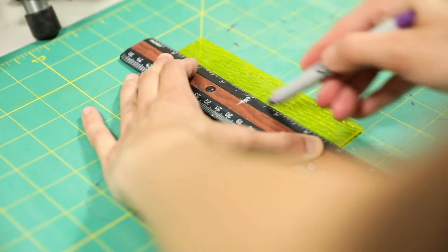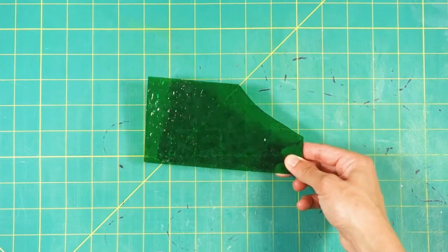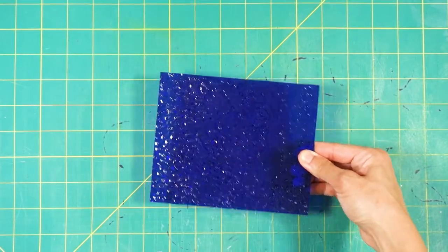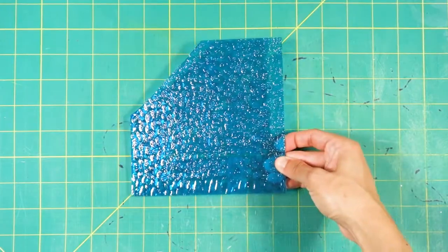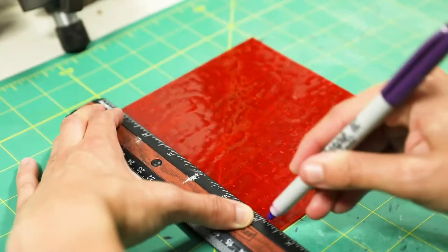First, we'll need to mark off where to cut our 6x6 sheet of cathedral glass. You should have one sheet of glass for each color of the rainbow. Using a ruler, measure out one inch from the glass's edge and draw a line with a marker.